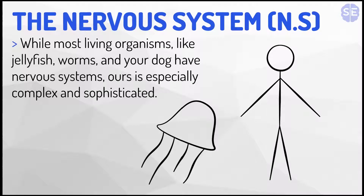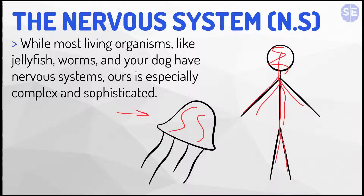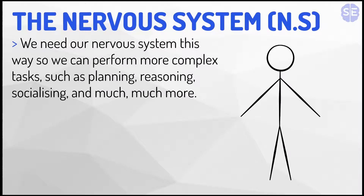While most living organisms, like the jellyfish and others like worms and your dog, have nervous systems, ours is especially complex and sophisticated — incredibly intricate compared to theirs. We need our nervous system this way so we can perform complex tasks such as planning, reasoning, socializing, and much more. A jellyfish might not be able to plan for the future because its nervous system is just too basic and not sophisticated like ours.